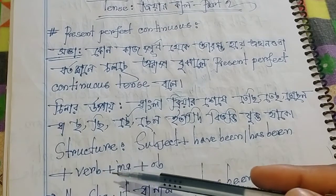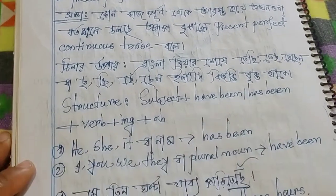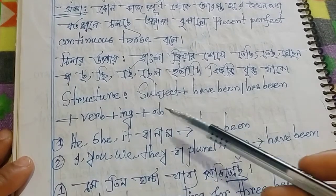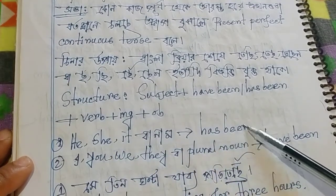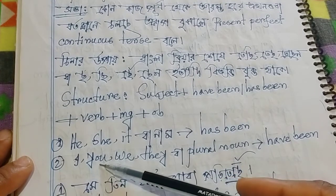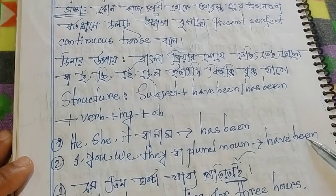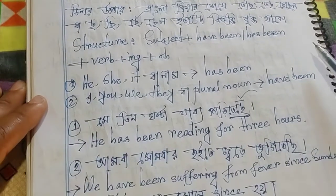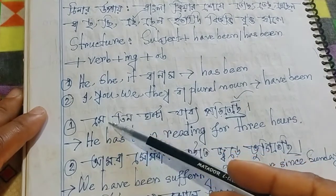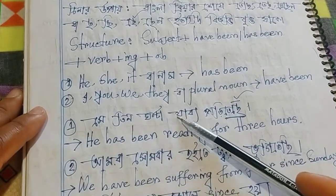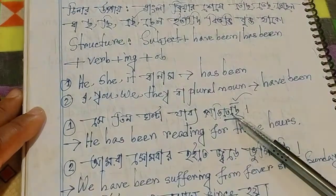...plus verb plus ing, plus object. If the subject is he, she, or it, use has been. For plural nouns or I/you/we/they, use have been. She has been — this is the plural noun form.